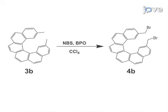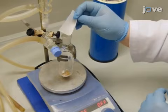To begin the de-bromination, weigh 0.356 grams of 2,15-dimethylhexahelicine, 0.374 grams of freshly recrystallized N-bromosuccinimide, and 24 milligrams of benzoyl peroxide. Place all solids in a 100-milliliter Schlenk flask with a magnetic stir bar.